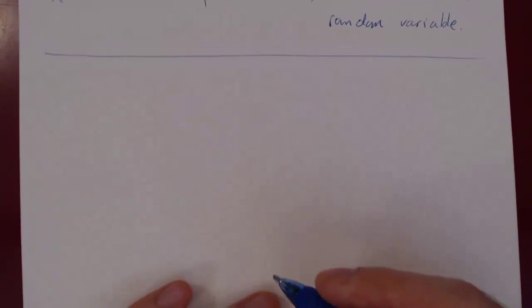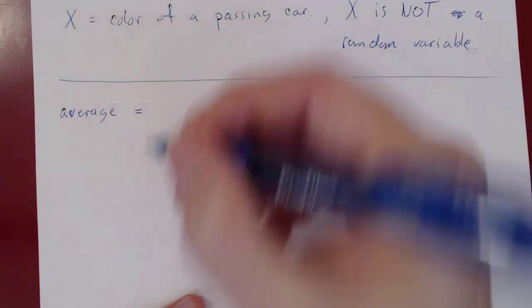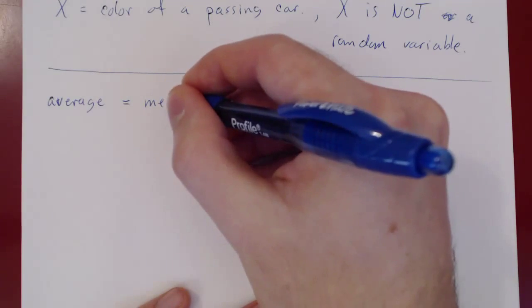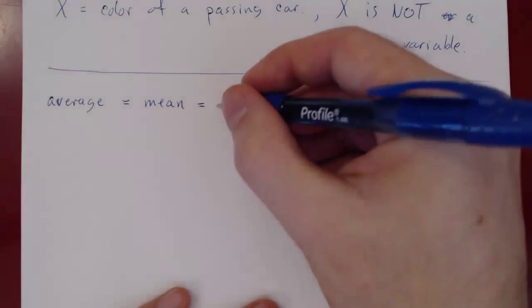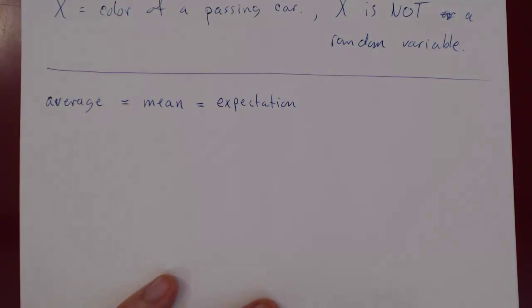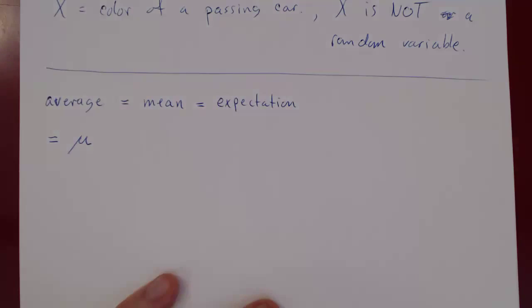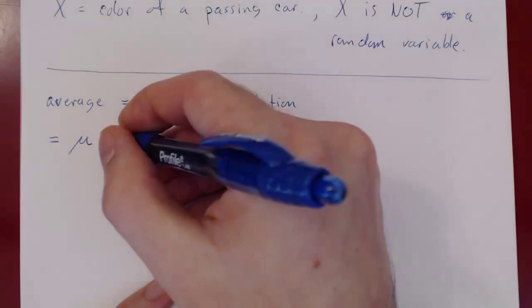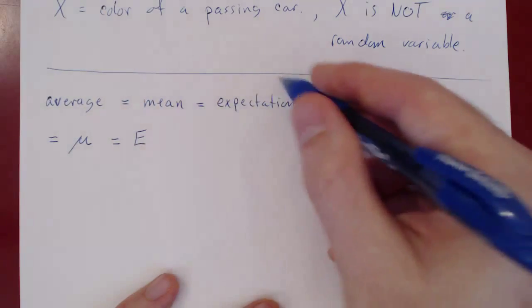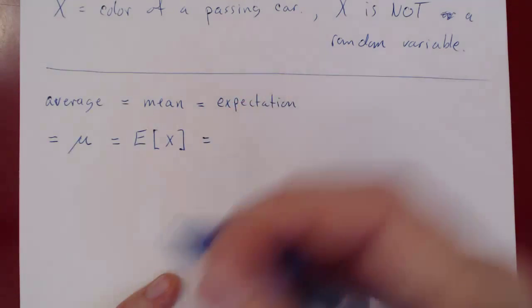We want to look at the average and the variance of a random variable. Suppose we have a random variable X — we will write its average. Sometimes we'll use the word mean, same thing, and we'll also use the word expectation. All three are synonyms. On average, the mean of X, the expectation of X — what do you expect X to be on average? We usually write this as mu, the Greek letter M, and also as E(X) for expectation of X.